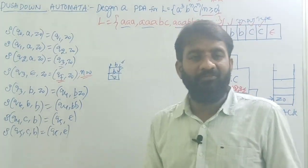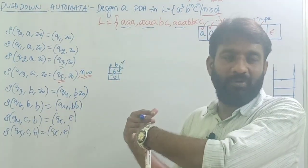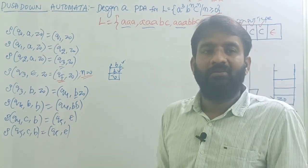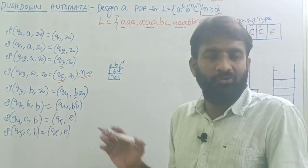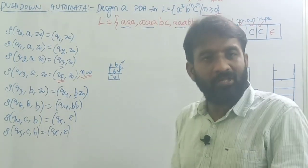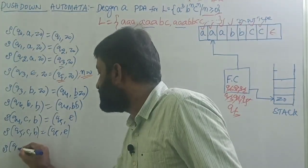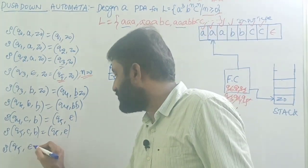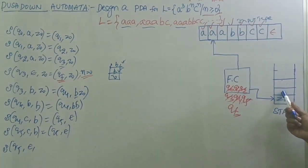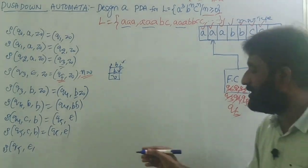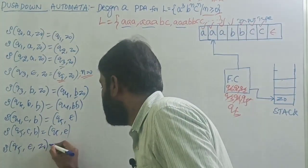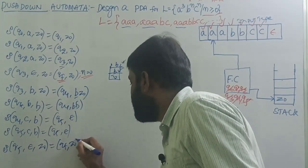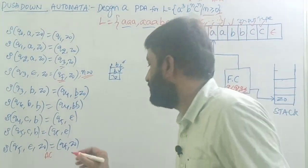If two C's remain in the input tape, then definitely two B's exist in the stack — all handled by the same Q5 self-loop transition. Now assume all C's are completed on state Q5, meaning the input tape is empty (epsilon) and all B's are also popped from the stack. The top of the stack is Z-naught. So: Q5, epsilon, Z-naught — move to the final state. This is acceptance by final state.